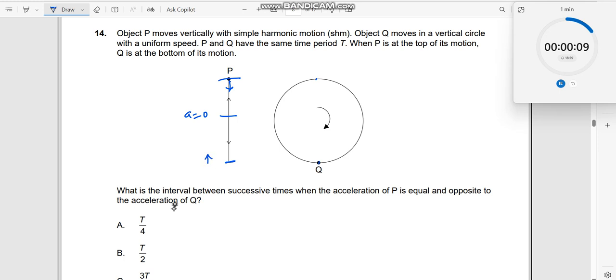Now in a similar way, what happens when the particle is moving like this? It has an acceleration like this. When the particle is at this point, the acceleration is like this - centripetal acceleration. So therefore, you see it is opposite to each other.